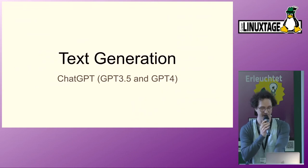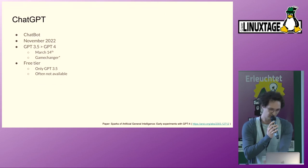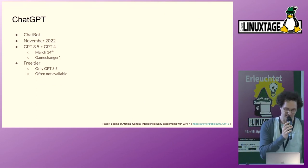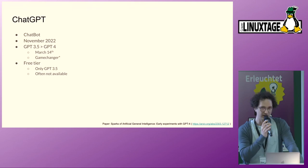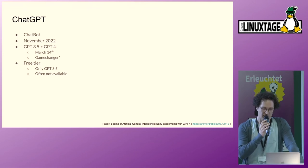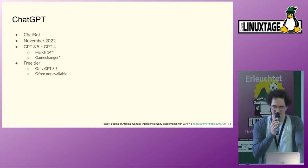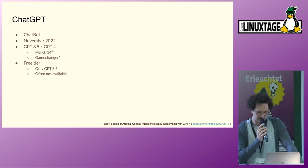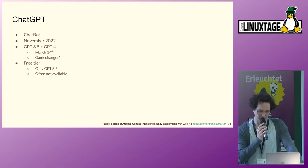The first part is text generation and ChatGPT. What is it? It's basically just a chatbot, and it's been around for a while — already in November last year there was first beta access. But what happened mid-March was the release of the newest model, GPT-4, the model on which ChatGPT operates.